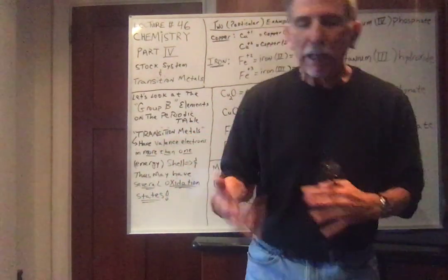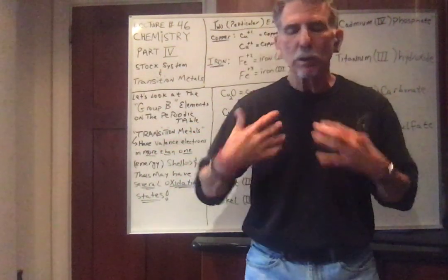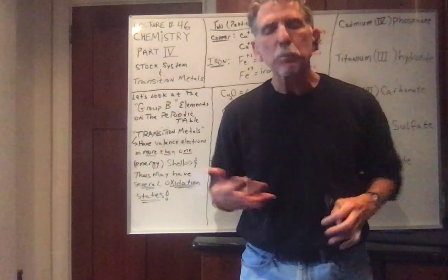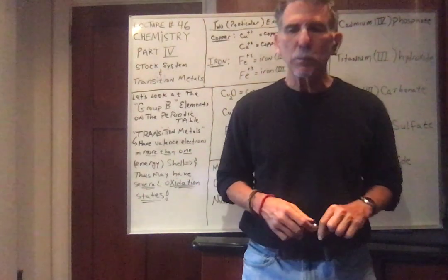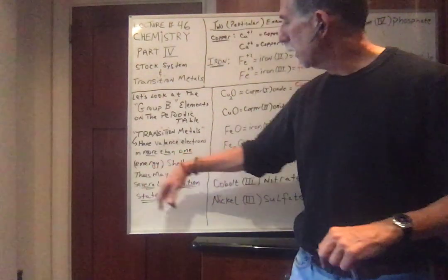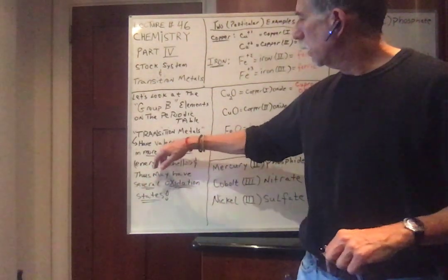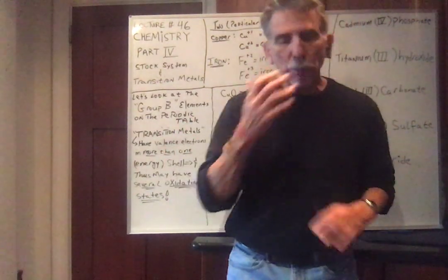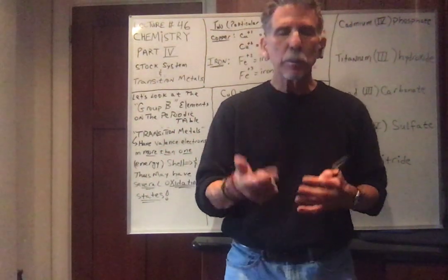The group B elements on a periodic table are called transition metals. Transition metals have valence electrons - valence electrons are the ones that are used in bonding. We've been saying they're the outermost shell, but in transition metals, it turns out that the valence electrons can be in more than one shell.